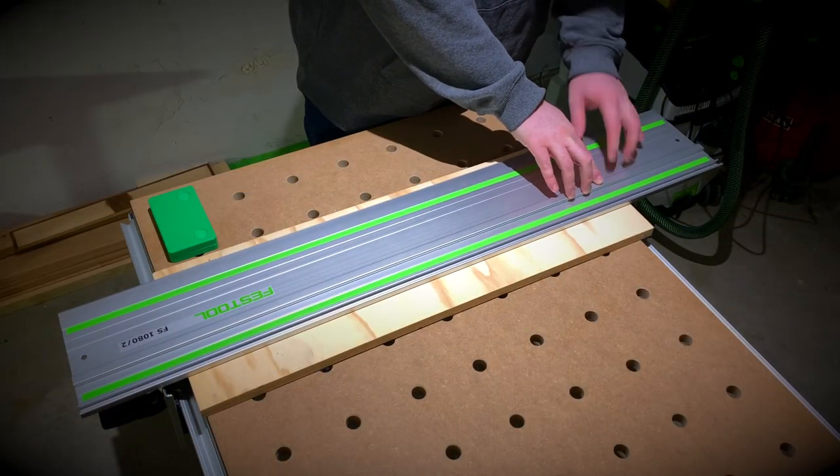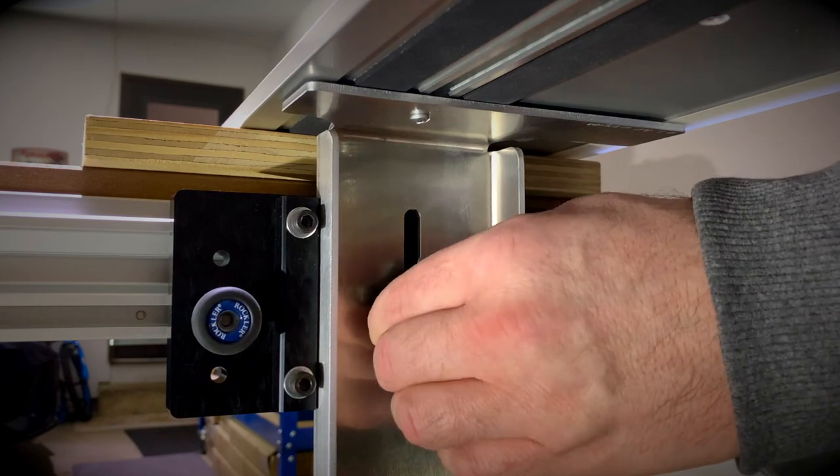The rail is sitting flush on the material, and the height is locked in on the front supporting bracket.